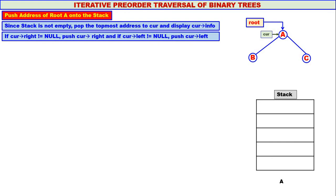Next, curr's right is not equal to null — it is C — so we push the address of node C onto the stack. And curr's left is also not equal to null — it is B — so the address of node B is also pushed onto the stack.